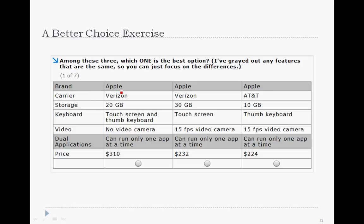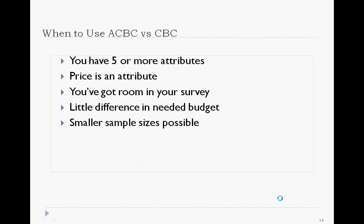Notice how Apple is the only brand shown in the choice tournament — this respondent must have said that's a must-have for them. In traditional CBC, we'd be showing random brands even though the respondent is clear on which brand they want. Also, with ACBC using summed pricing, the price shown in the choice tournament matches the product profile it's paired with, unlike traditional CBC. Price modeling with ACBC is very flexible and accurate.